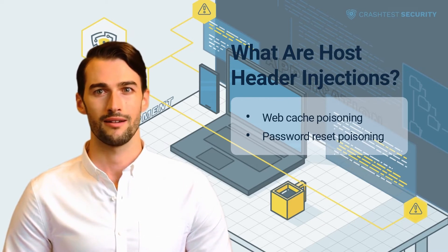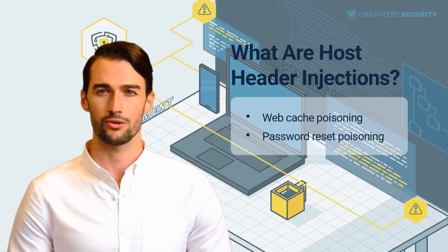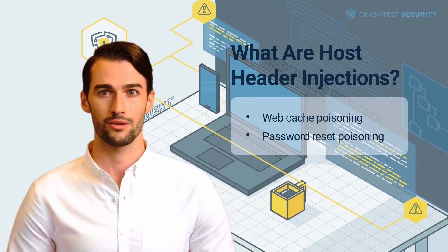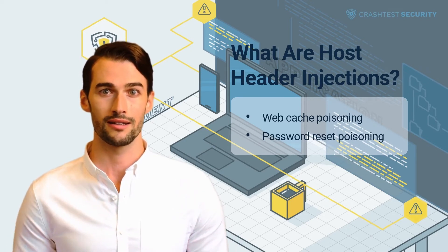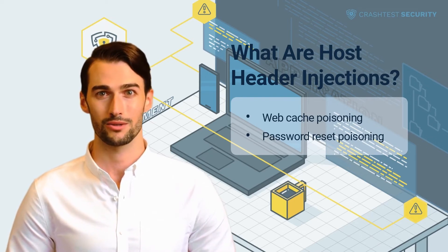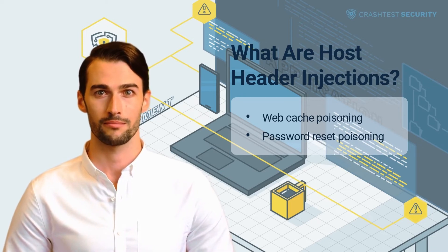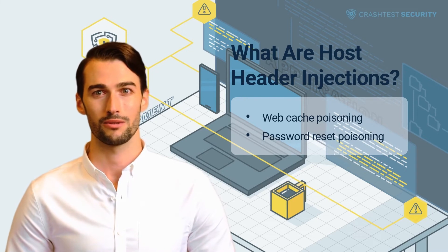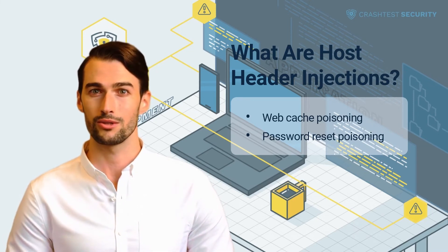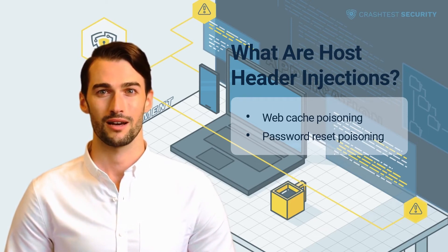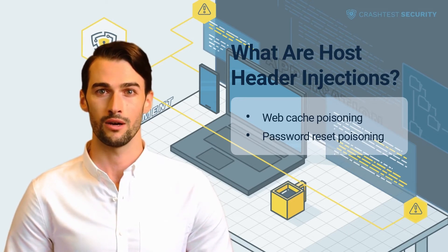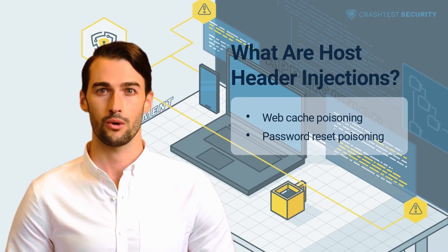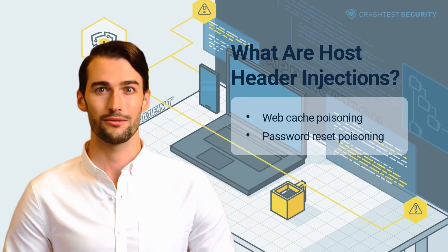Another impact a host header injection can have is to poison the password reset functionality, tricking users into clicking a reset link and then capturing their new password. To understand this problem, it's necessary to understand the difference between relative and absolute URLs. Most websites do not need to know the domain they operate under and provide relative URLs, which are a better choice from a development perspective and offer greater security. However, an absolute URL is required in certain instances, such as when links are generated in response to a password reset request, because users will be coming from outside and need the complete domain address. If a web application uses the host header when generating the reset link, this creates the possibility of serving a poisoned link. If users follow the link and the website looks similar to what they expect, they can effectively deliver their credentials to attackers.